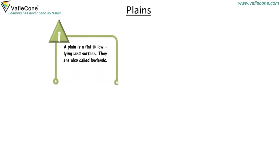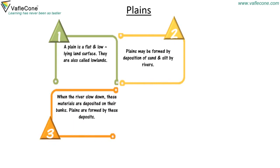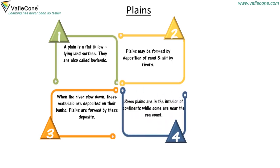Plains. A plain is a flat and low-lying land surface. They are also called lowlands. Plains may be formed by deposition of sand and silt by rivers. When the rivers slow down, these materials are deposited on their banks. Plains are formed by these deposits. Some plains are in the interior of continents, while some are near the sea coast.